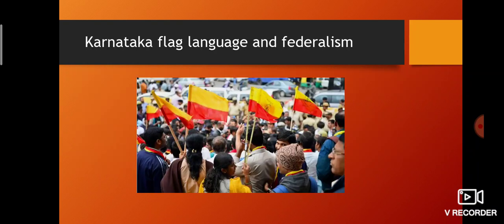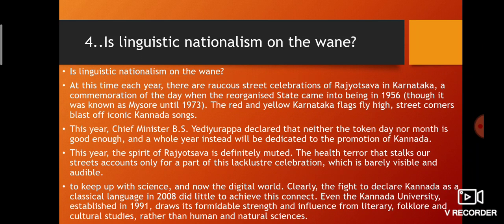The next editorial is on Federalism, Language, and Karnataka. The question is: is linguistic nationalism on the wane? Each year there is celebration of Rajyotsava in Karnataka, commemorating Karnataka Day on November 1st, 1957, when Mysore was renamed Karnataka after its formation in 1956. The red and yellow Karnataka flags fly high and iconic Kannada songs play at street corners.